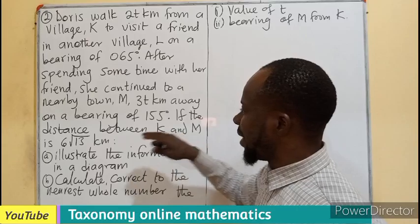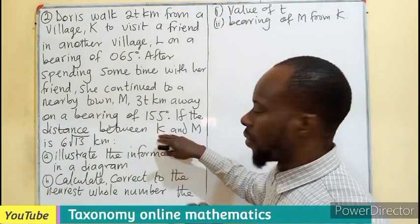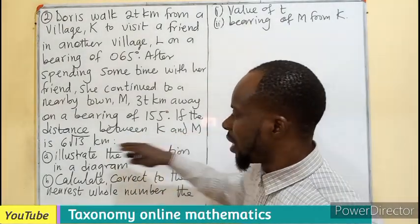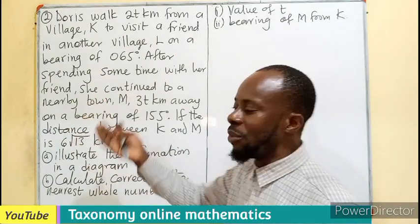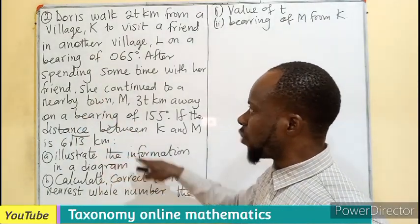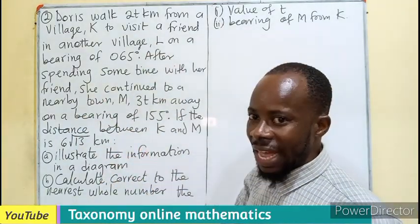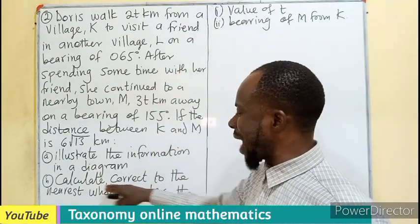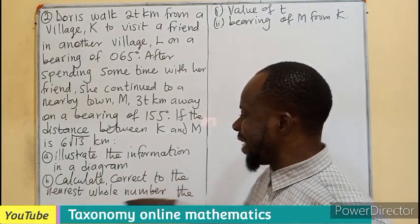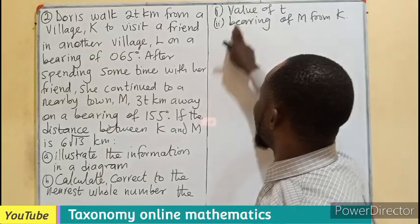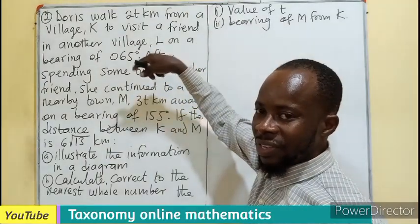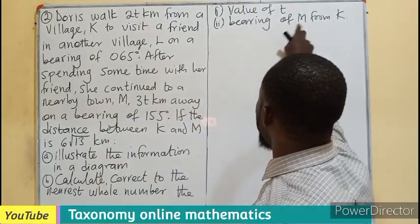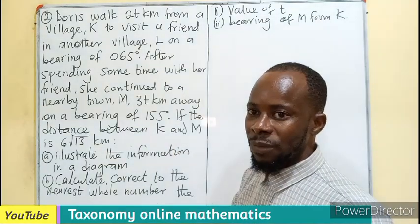So if the distance between the K town and that of the M town is 6 root 13 kilometers, we have to illustrate this information on the diagram. Use the diagram to calculate correct to the nearest whole number the value of T which is in the distance, then the bearing of M from K.